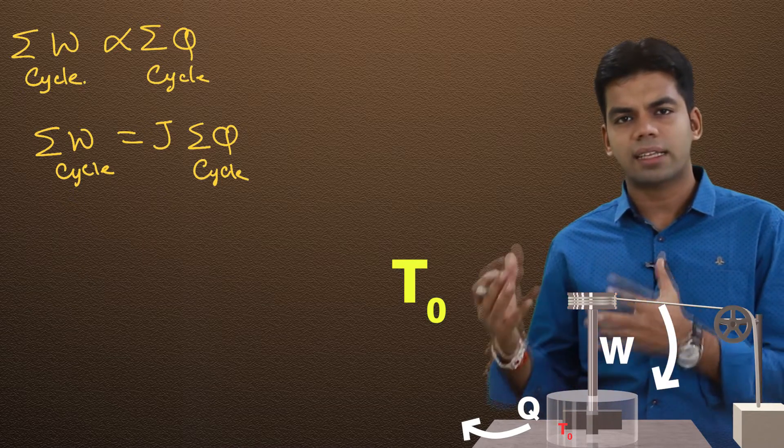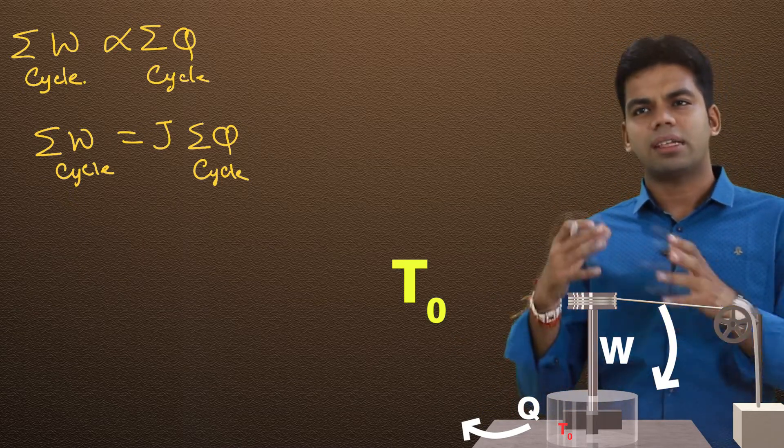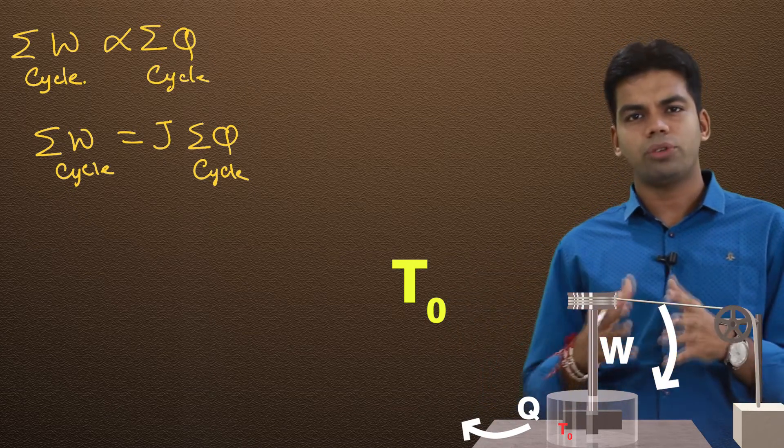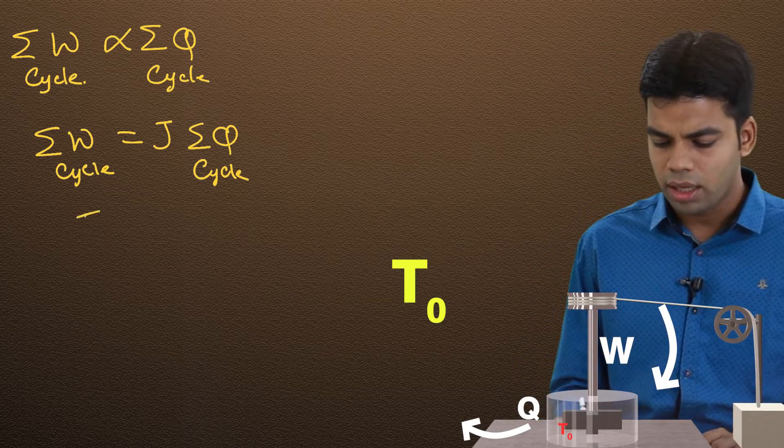Now the reason he was getting this proportionality sign and the Joule constant was that at that particular time, the unit of heat and work was different. But later on he found that this Joule constant we took as 1.